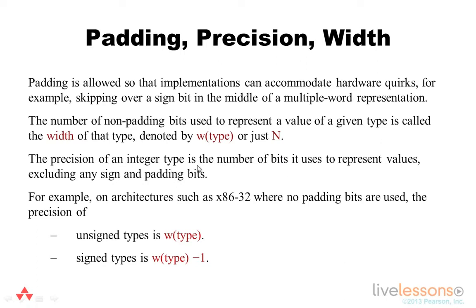The precision is the number of bits used to represent the value, which excludes any sign or padding bits. For example, on an architecture such as x86-32 that doesn't use padding bits, the precision of an unsigned type is equivalent to the width of the type, and the precision of a signed type is one less than the width of the type. This subtracts the bit used for representing the sign.